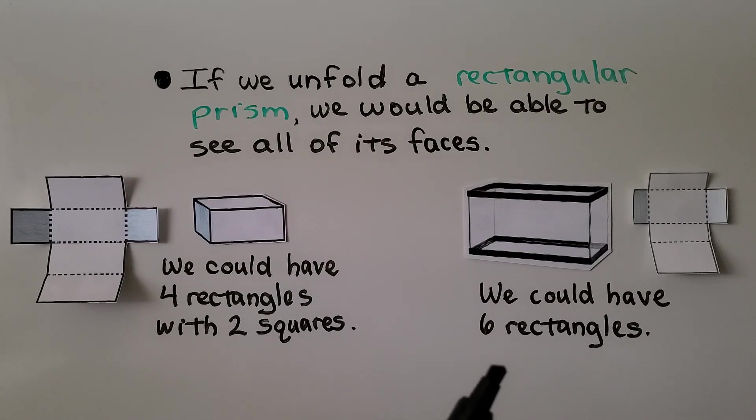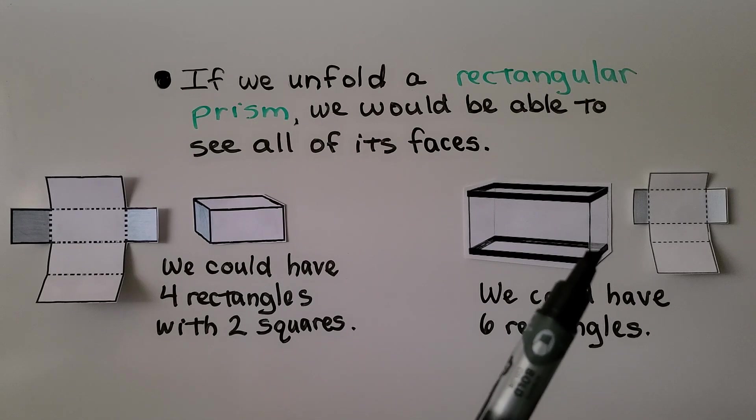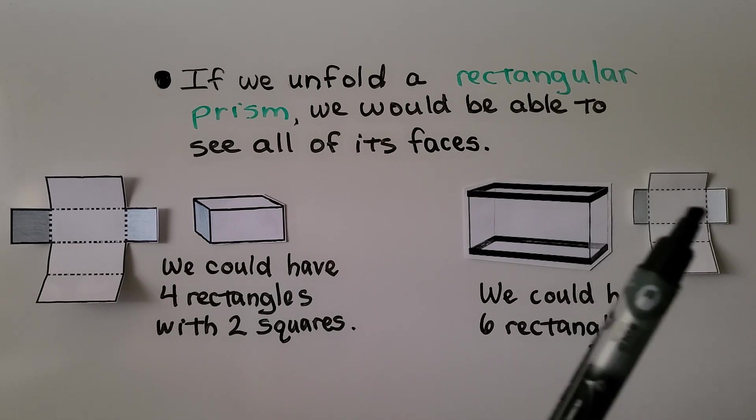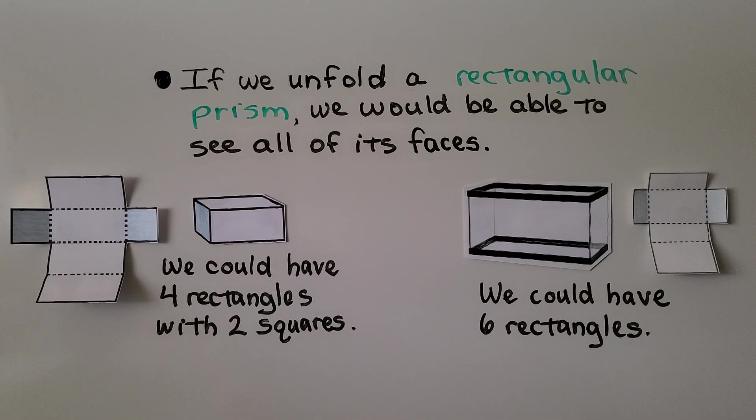We could also have six rectangles. If the sides are rectangles, then unfolded, we would see rectangles on the side.